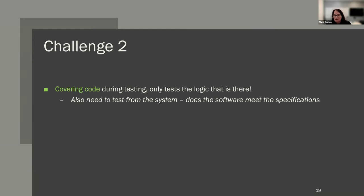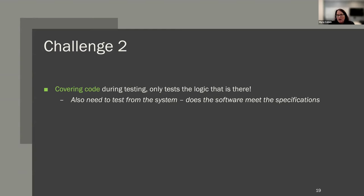A second challenge is that covering code during testing only tests the logic that's there. We have automated testing approaches today — fuzzers, tools that generate test cases — but we also need to test from the system level and make sure our software meets specifications. Going back to the BLAST example: the original crash would have been findable, but for the max target sequence issue, unless we knew the expected behavior and were specifically testing for it, we may not have found it.